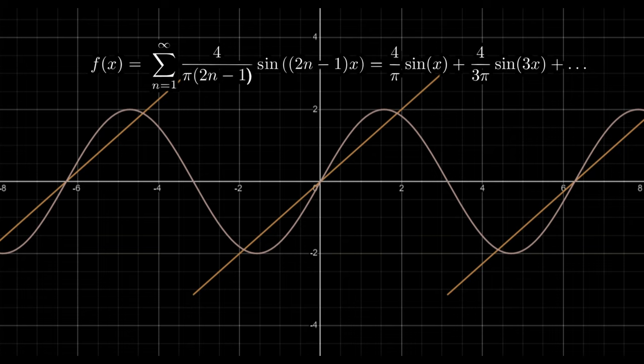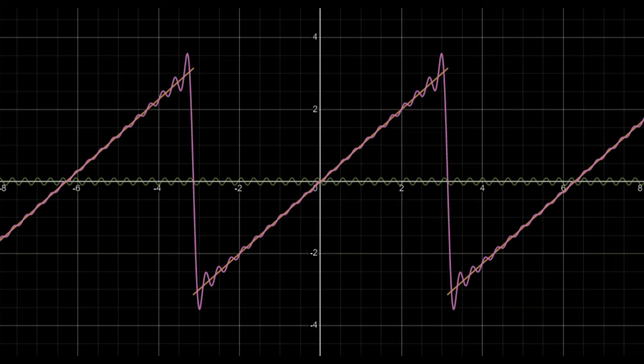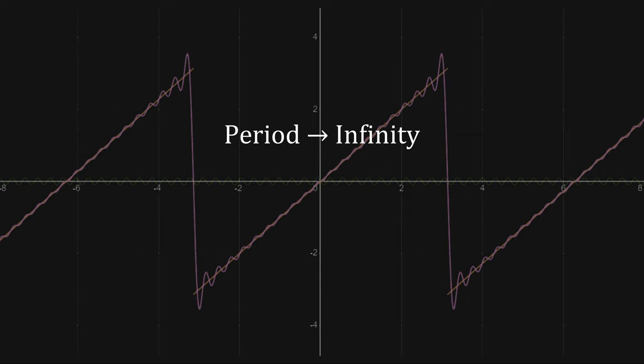If the function is not periodic, you can think about it as a periodic function where the period time approaches infinity, or the frequency approaches zero. In this case, the discrete sum turns into an integral, and the discrete coefficients turn into a function. This limit is called the Fourier transform.